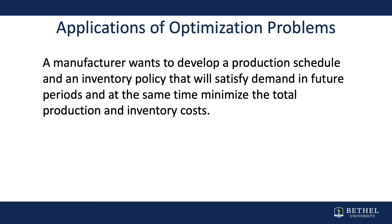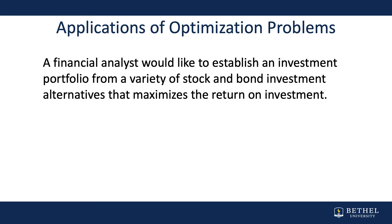Here are some examples of scenarios that qualify as an optimization problem. A manufacturer wants to develop a production schedule and an inventory policy that will satisfy demand in future periods and at the same time minimize the total production and inventory costs. A financial analyst would like to establish an investment portfolio from a variety of stock and bond investment alternatives that maximizes the return on investment.